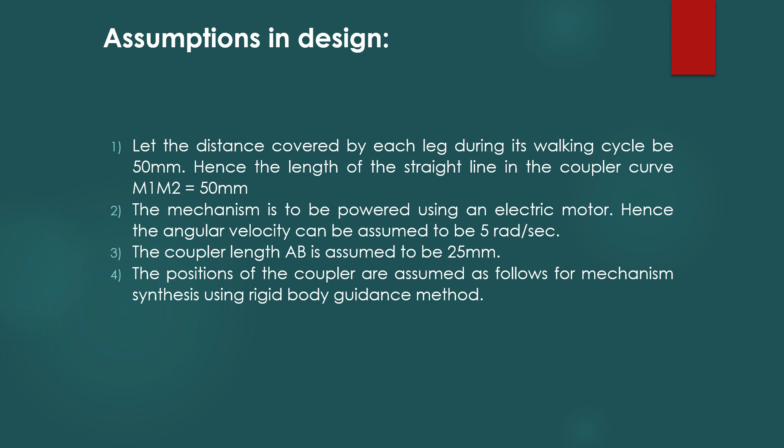Two, it is assumed that the mechanism will be powered using an electric motor. Hence, the angular velocity can be assumed to be constant and of the value 5 radians per second. Three, the coupler length AB is assumed to be 25 millimeters.